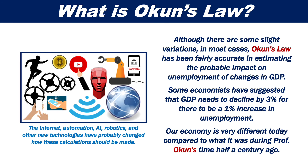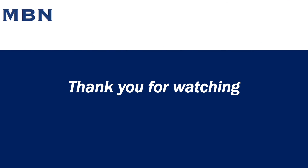Some economists have suggested that GDP needs to decline by 3% for there to be a 1% increase in unemployment. Our economy is very different today compared to what it was during Professor Okun's time half a century ago. Thank you for watching this brief video on Okun's Law.